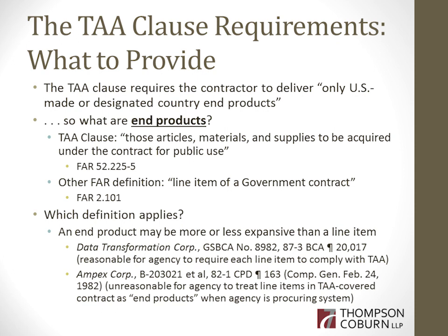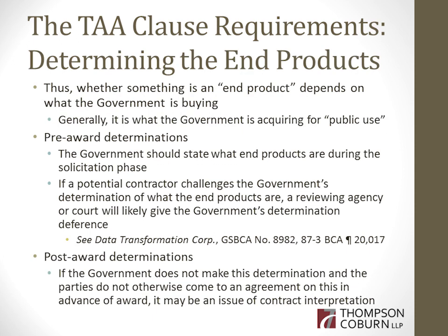What are end products? As the TAA clause states, they are the articles, materials, and supplies to be acquired under the contract for public use. FAR 2.101 defines an end product as a line item of a government contract — but end products can be more or less than a line item. There is case law supporting this interpretation. What constitutes an end product depends on what the government is buying and what is being acquired for public use.